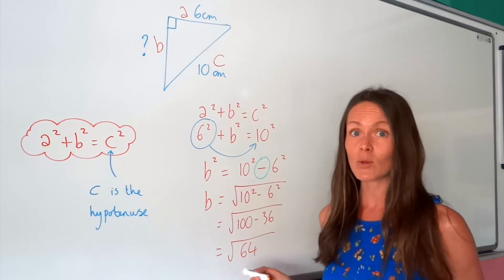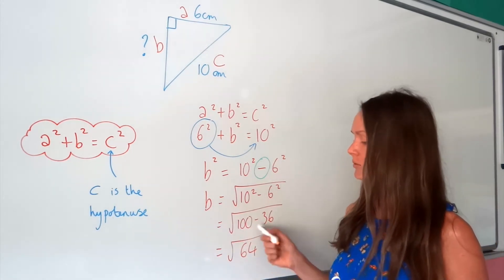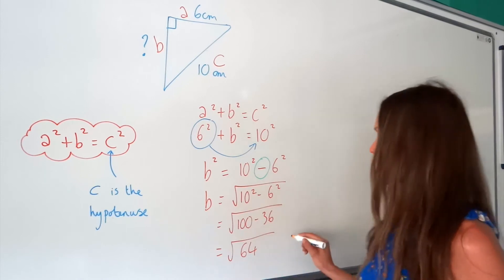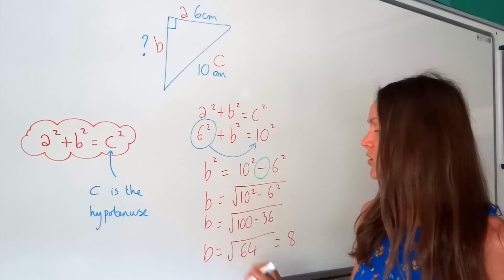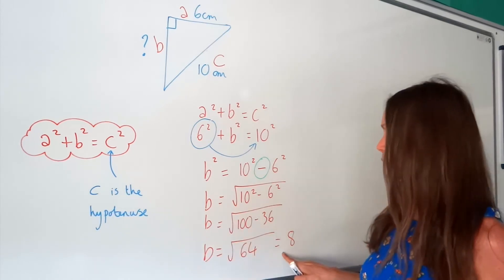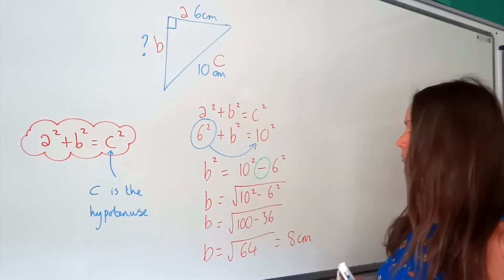So 64 is a square number, so I can actually square root 64 to get a whole number, which is 8. So you can see B is on the other side, so it means that B is equal to 8 centimetres.